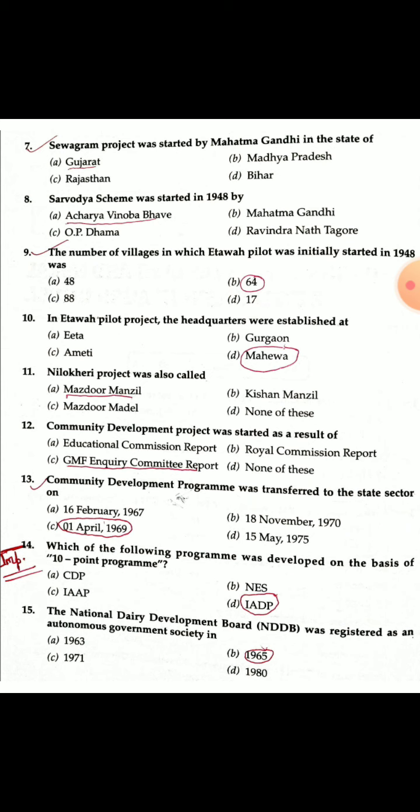The number of villages in which the Etawah Pilot Project was started in 1948 — 64 villages were included when the Etawah Pilot Project first started. Question 10: The Etawah Pilot Project headquarters were established as a result.